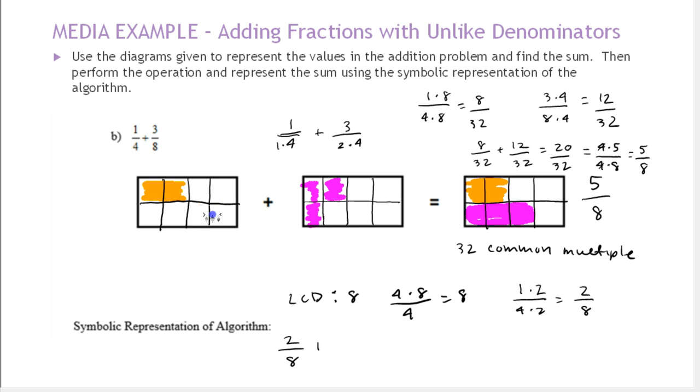The 3 eighths, we don't even need to rewrite, because it's already over 8. Add the numerators, keep the denominator, and we have 5 eighths. So if you find the least common denominator, you may not need to simplify. In this case, we didn't. If you use just any common denominator, you can find the product, and it's a little bit easier to find the common denominator, but you'll have to simplify in the end.